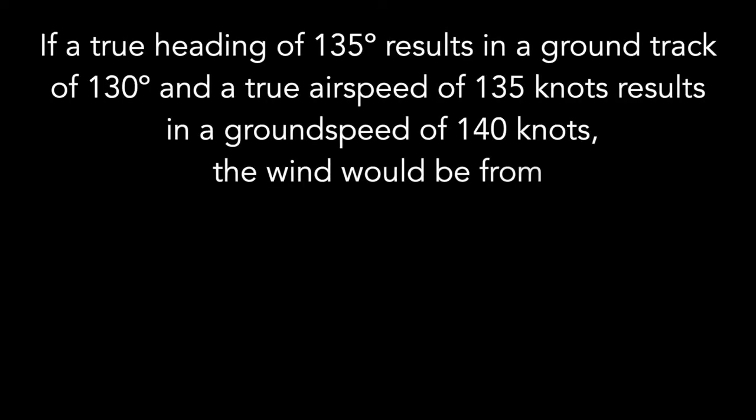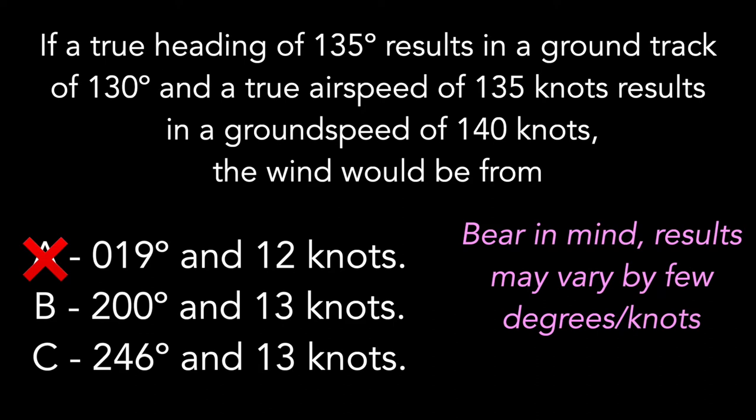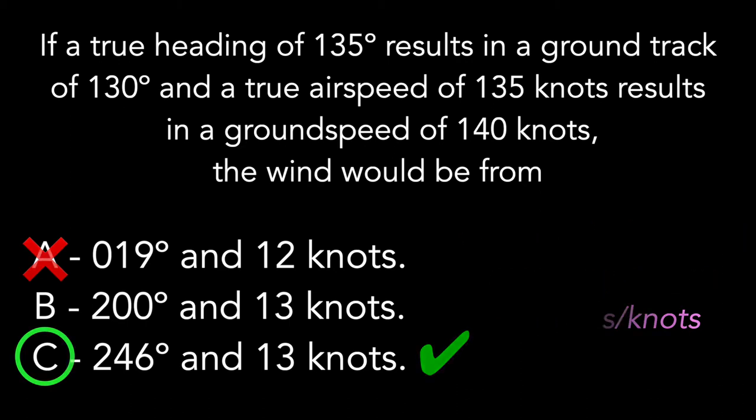As we can see from our given answer options, the wind speeds are 12 and the last two being 13 knots. The options are pretty close to each other, not giving much room for error. However, in this case, we are also given a large difference in wind directions. We can easily use the process of elimination to remove answer A, definitely being way out of line here. My best and closest answer would be C, 246 degrees and 13 knots. This is selected as the correct answer.